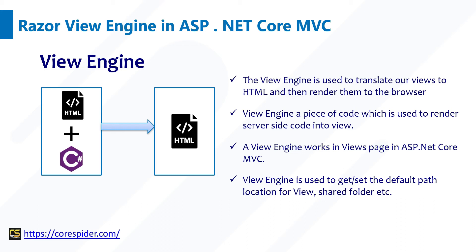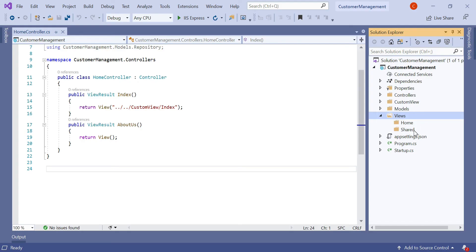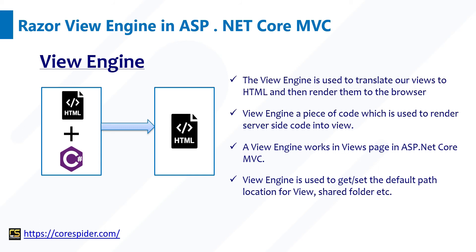A View Engine is developed in such a way that it works only for the View and the shared folder. In the application, if instead of the shared folder you rename it to a common folder, then the View Engine will not work, because the View Engine is developed according to the View and the shared folder. If you want to create a custom folder, then you need to develop your own custom View Engine. How to develop a custom View Engine we may discuss in our upcoming videos.